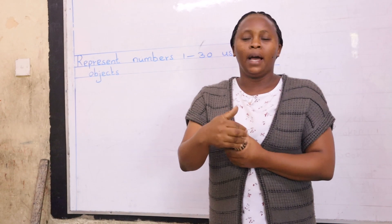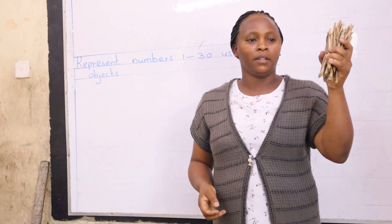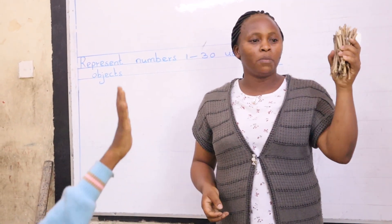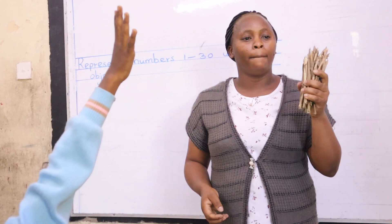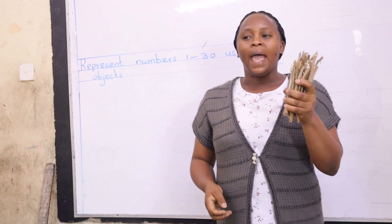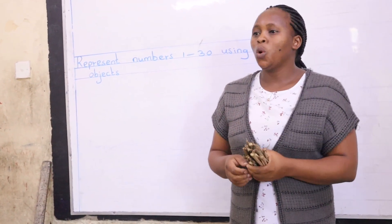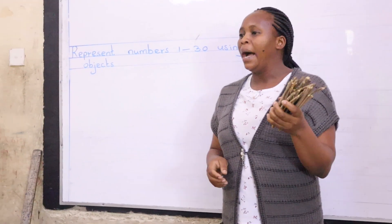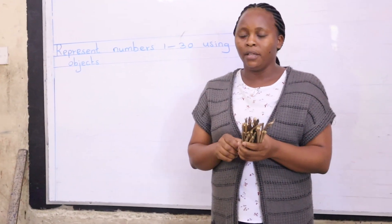With me here, I have some objects. Who can tell me which objects I'm holding? I have sticks. So we are going to count using these sticks, 1 to 30. Are we together?